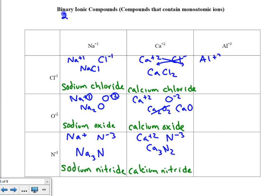Aluminum plus 3 and Cl minus 1. Crisscrossing, we get AlCl₃. The name of this compound is aluminum chloride.